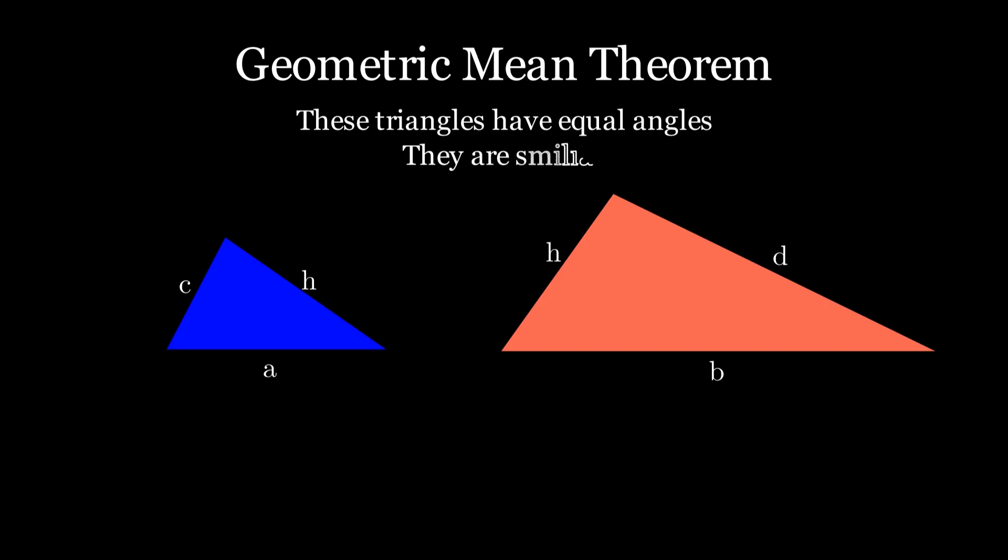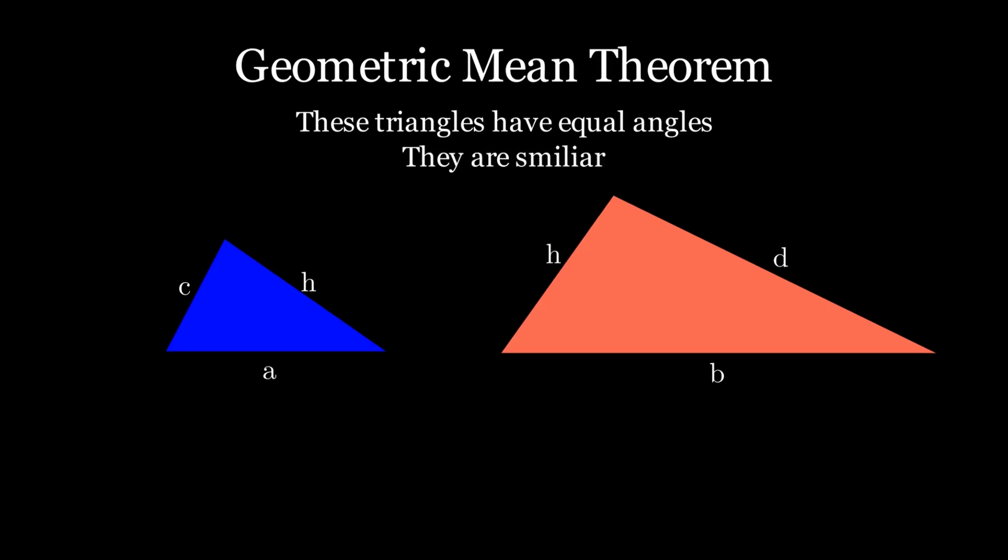This means that the ratios of their lengths and angles are the same. Therefore, the length of the red triangle's shorter leg to its longer leg is equal to the length of the blue triangle's shorter leg to its longer leg.